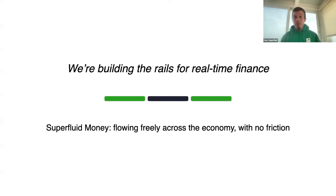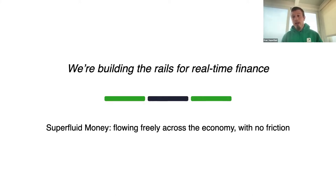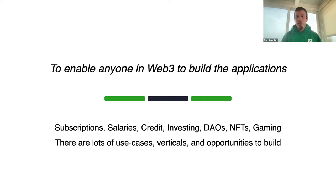We envision a completely free-flowing economy where money can flow from application to application, from hand to hand, in a peer-to-peer fashion on the blockchain with no friction — that's what 'superfluid' means: no friction. But obviously a protocol in itself is not that useful; it's just a set of rules. What's really necessary is for builders like you to come and build applications that leverage this technology.